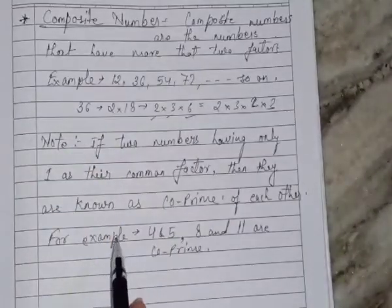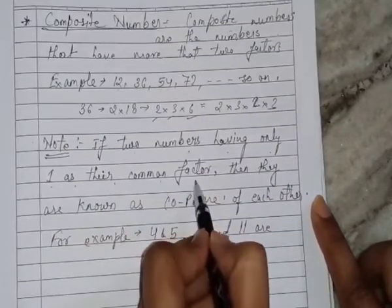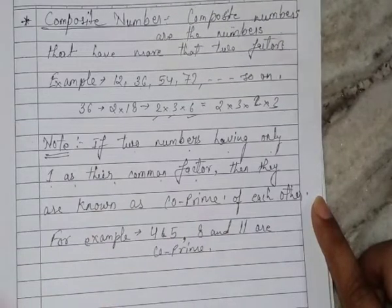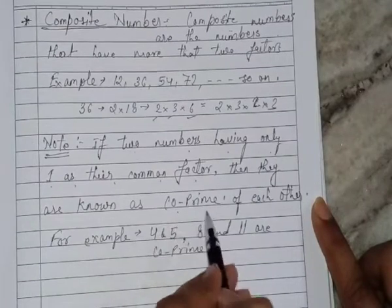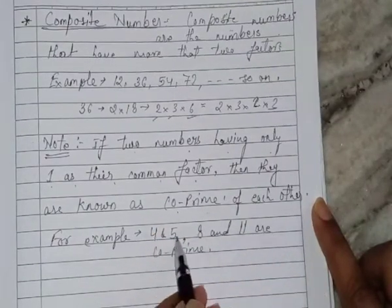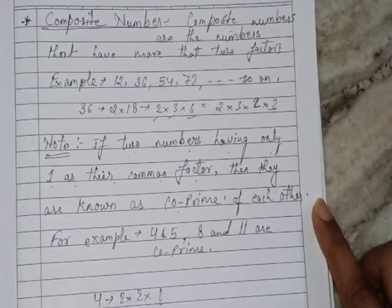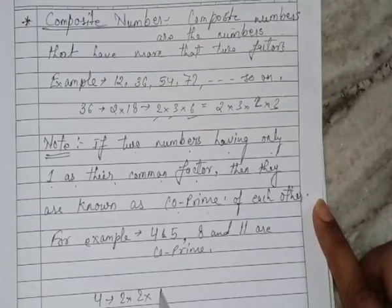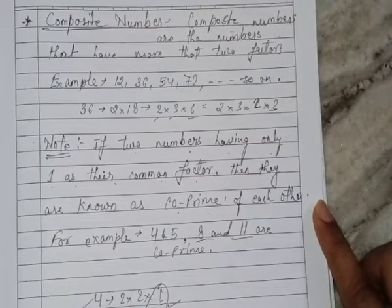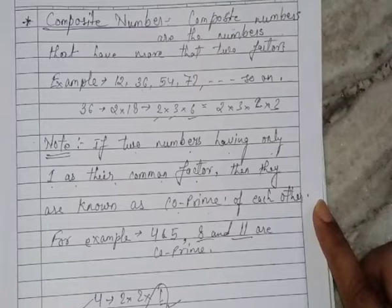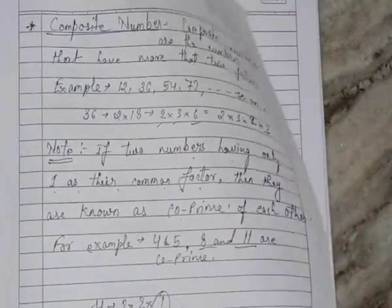A point to note: if two numbers have only 1 as their common factor — meaning they don't appear in each other's multiplication table other than through 1 — they are called co-prime. For example, 4 and 5: 4 can be written as 2 × 2 × 1, and 5 as 5 × 1, so their only common factor is 1 — they are co-prime. Similarly, 8 (written as 2 × 2 × 2) and 11 (written as 11 × 1) share only 1 as a common factor, so they are also co-prime. I hope you understand.